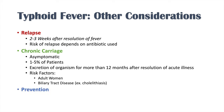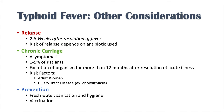Prevention of typhoid fever begins with access to fresh water, proper sanitation, and good hygiene, since the infection is often transmitted through contaminated water. There is also a vaccination for typhoid fever, and combining vaccination with clean water and sanitation can greatly help prevent the disease in the first place.